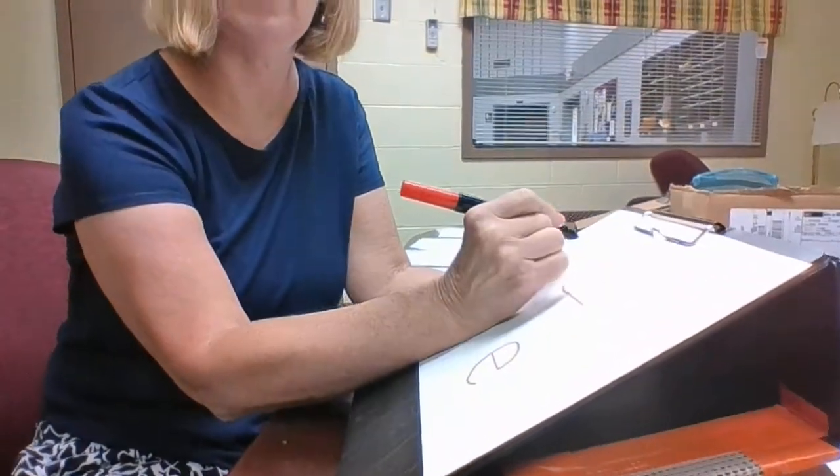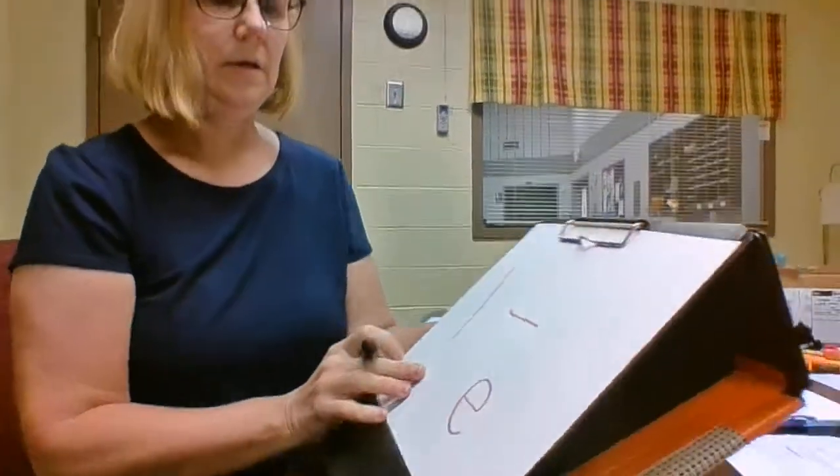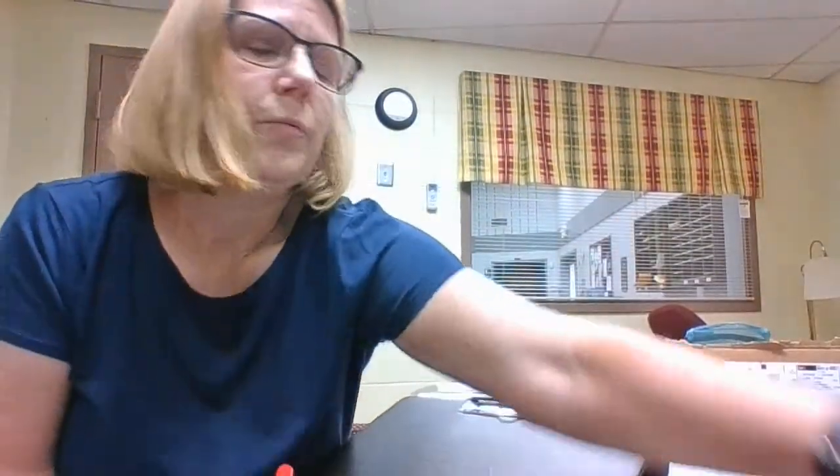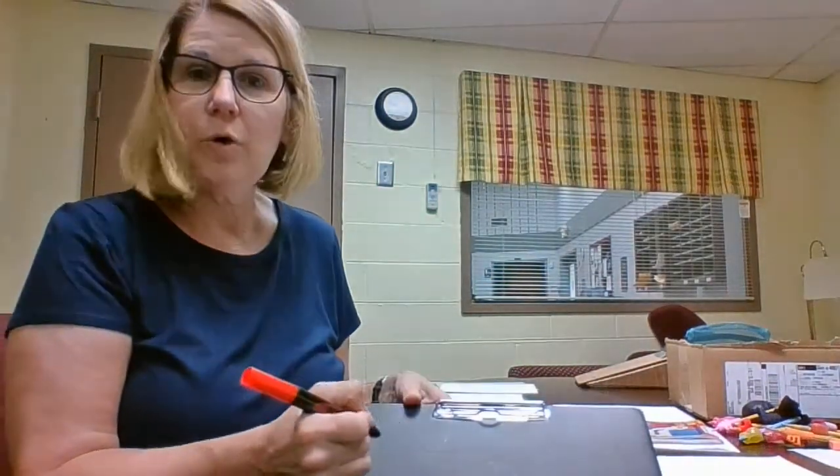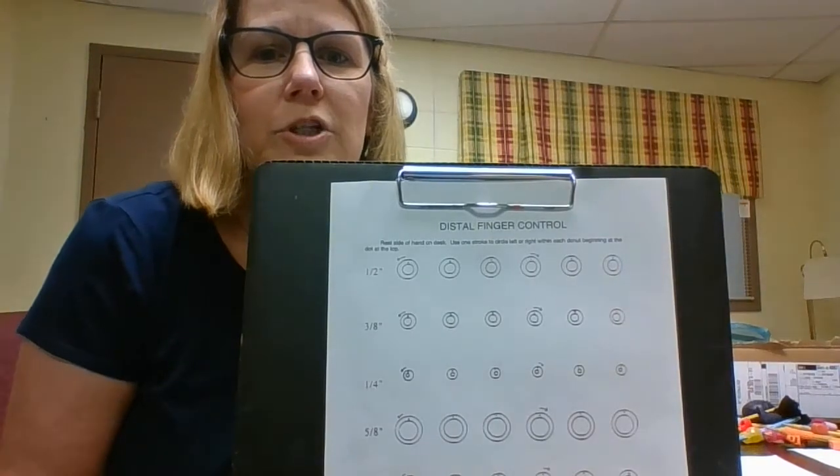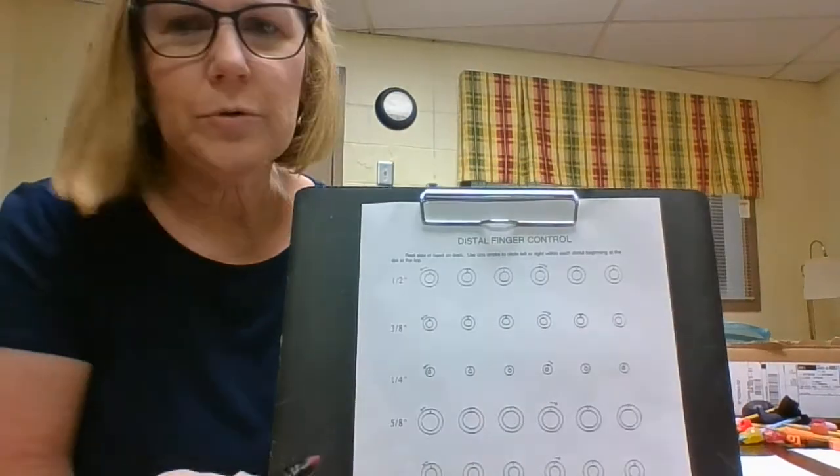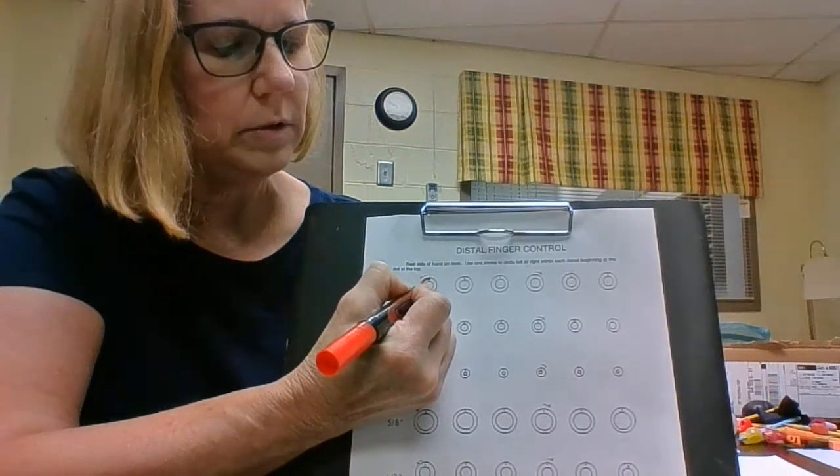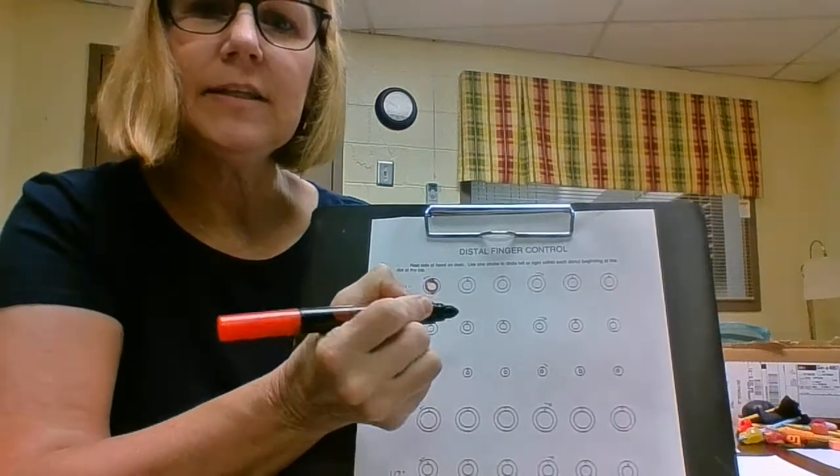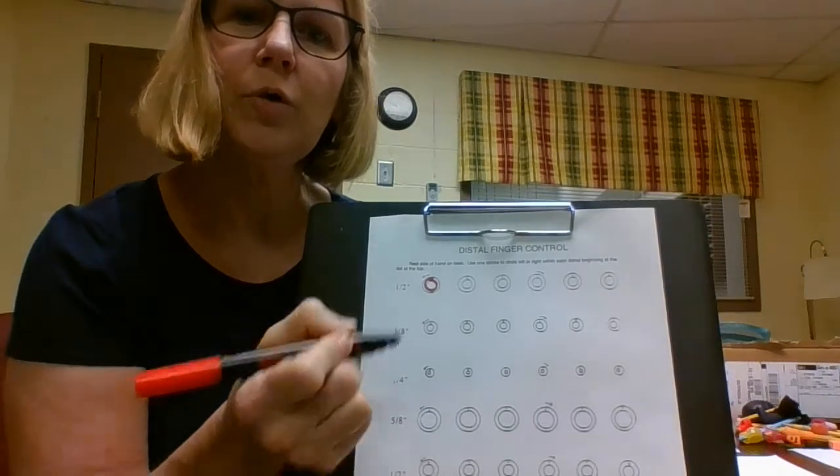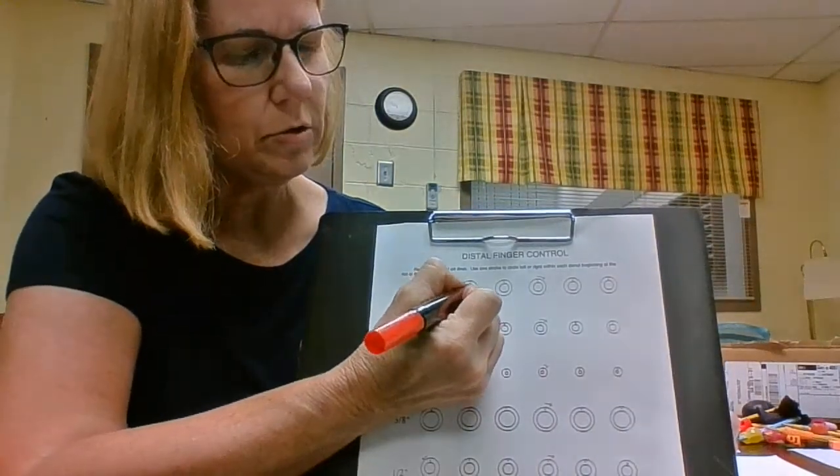Other things to help with writing legibility and improve their control of their fingers: this is a distal finger control worksheet by Mary Benbow. When you're writing with this, she has arrow directions. You start at the dot and go around, so it gets this motion in your hand and it helps the kids get greater control when they're writing.